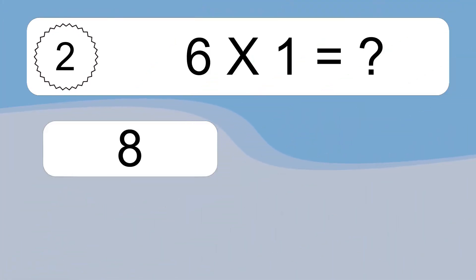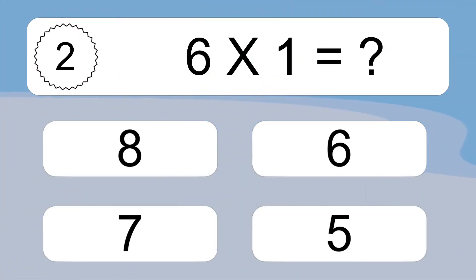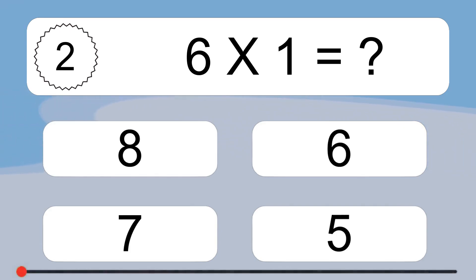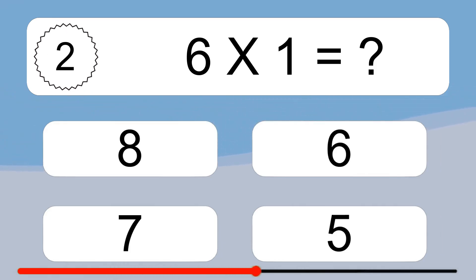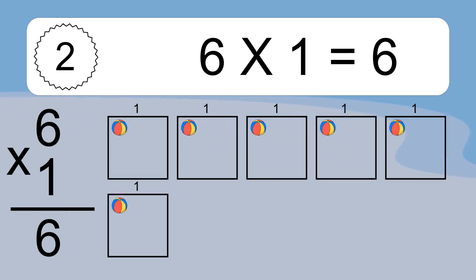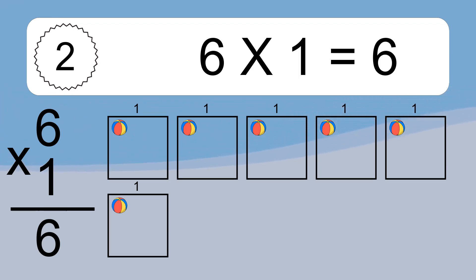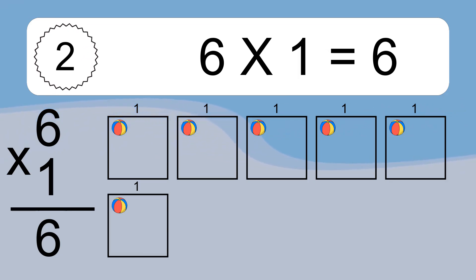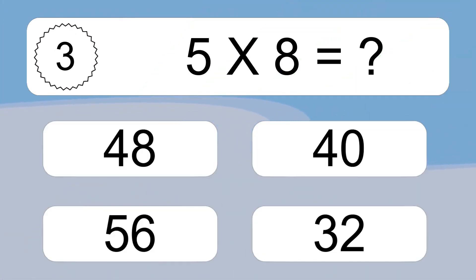6 times 1 equals what? 6 times 1 equals 6. We have 6 boxes, and each box has 1 colorful ball inside. If you count all the balls in all the boxes together, you will have 6 times 1 balls. This equals 6 balls.